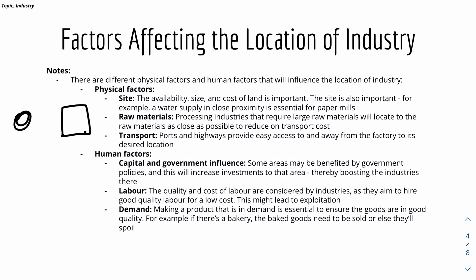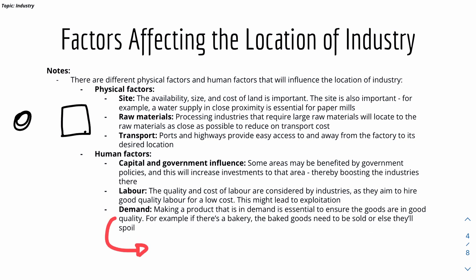For human factors, capital and government influence are important — some areas have government policies that boost the local area or attract companies to move there. There's also labour, where the quality and cost of labour are taken into account, as companies aim to hire good quality labour at a low cost; however, this might lead to exploitation in certain parts of the world. For demand, making a product that is in demand is essential — for example, in a bakery, baked goods need to be sold before they spoil, relating to supply and demand.